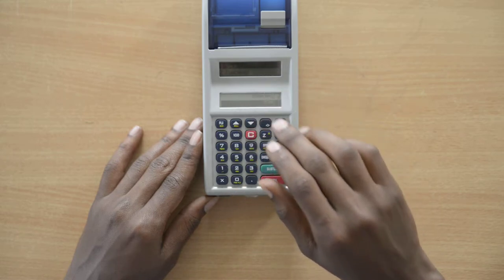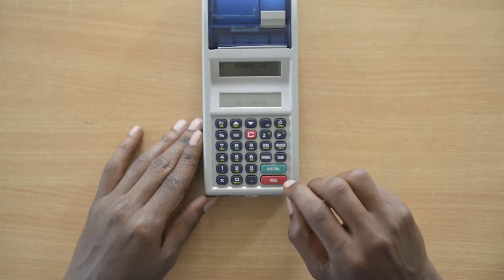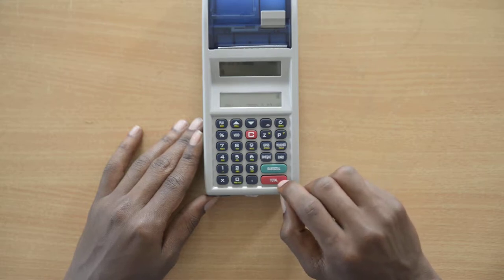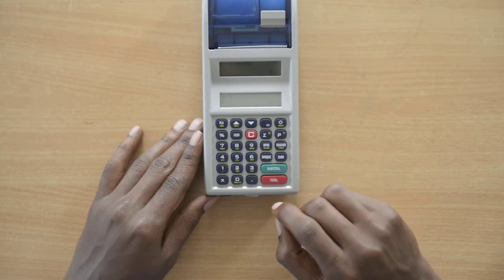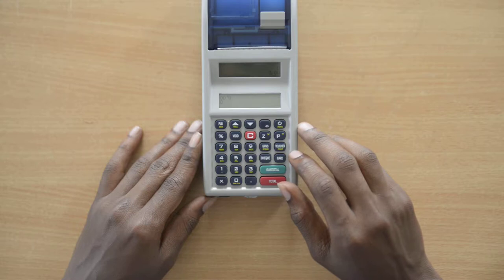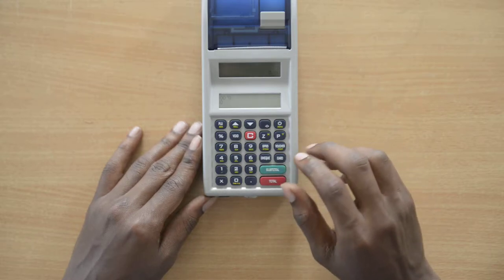You select sales by pressing total. It becomes TIN up, buyers TIN. Then you select total again, it becomes buyers name. Then you select total again, it becomes 0.000. This is the place for entering the code number of the item.